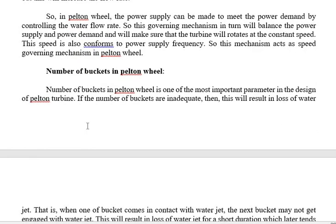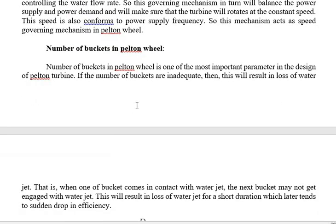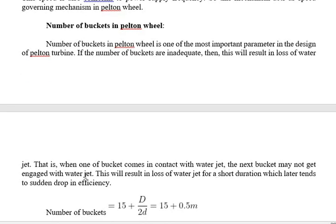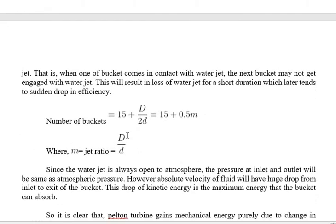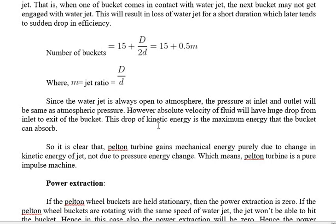The number of buckets must be adequate. If the number of buckets is insufficient, the water jet from the nozzle will not strike the wheel effectively. If the number of buckets is too many, the next bucket may not engage with the water jet, also causing losses. In both cases there will be a drop in efficiency, so an equation is used to calculate the correct number of buckets required for maximum efficiency.